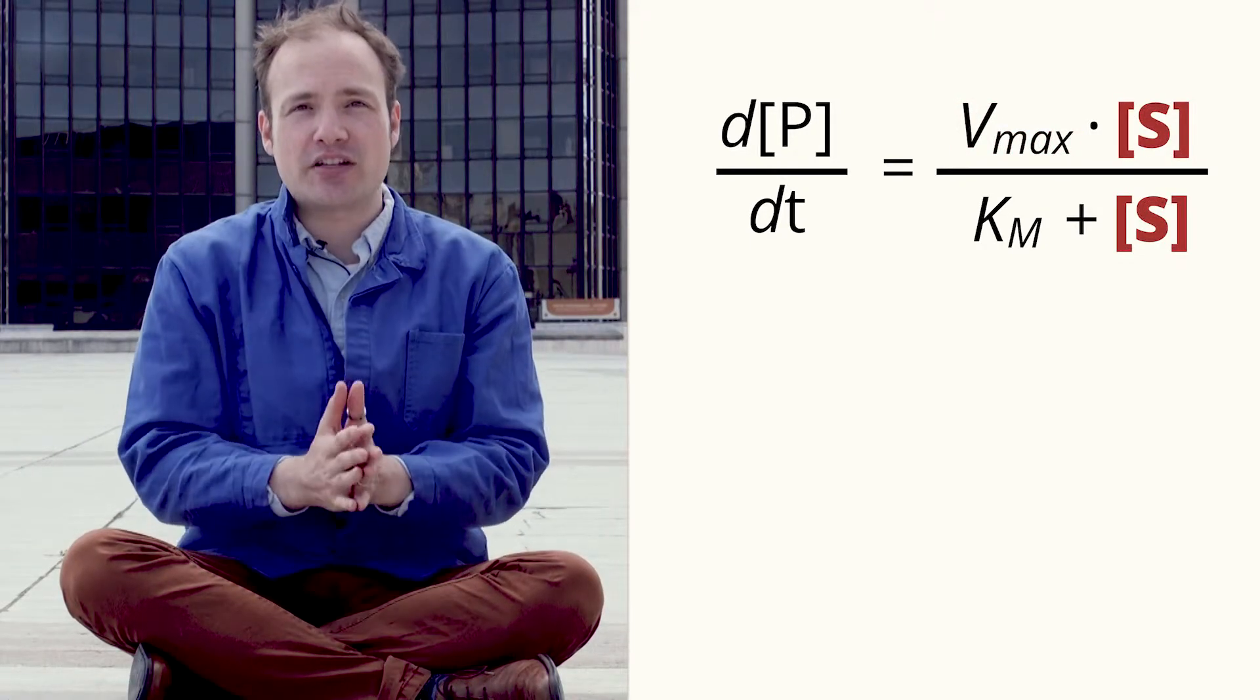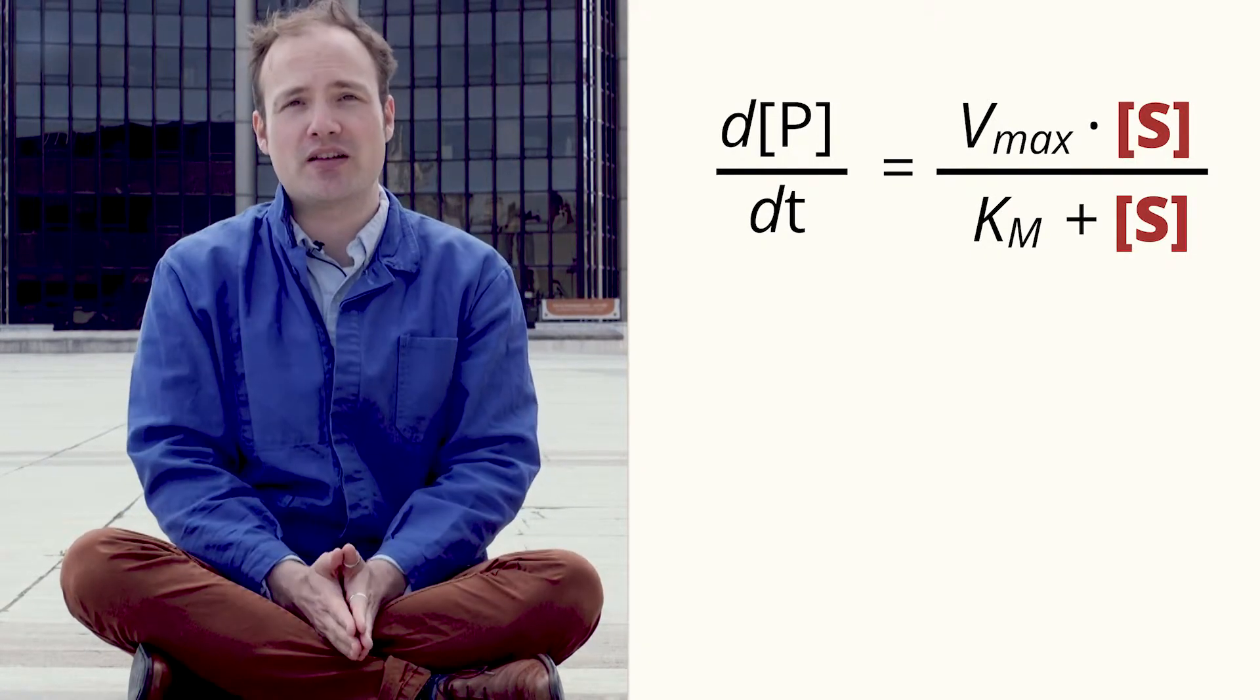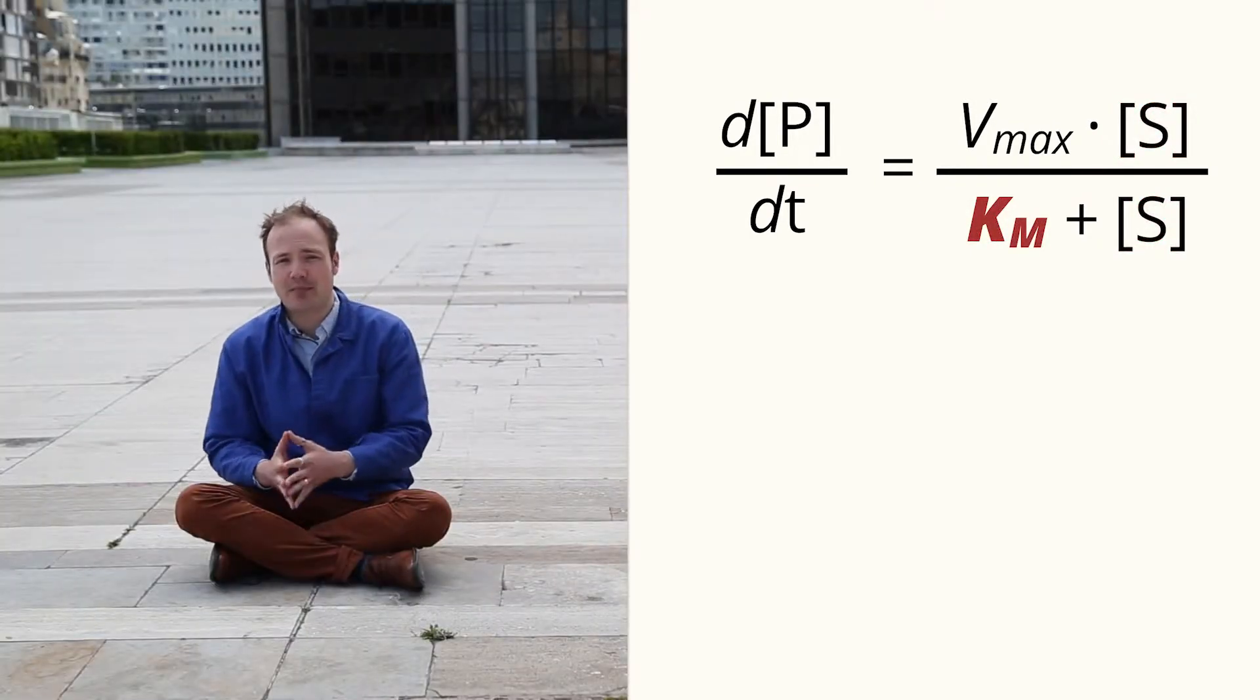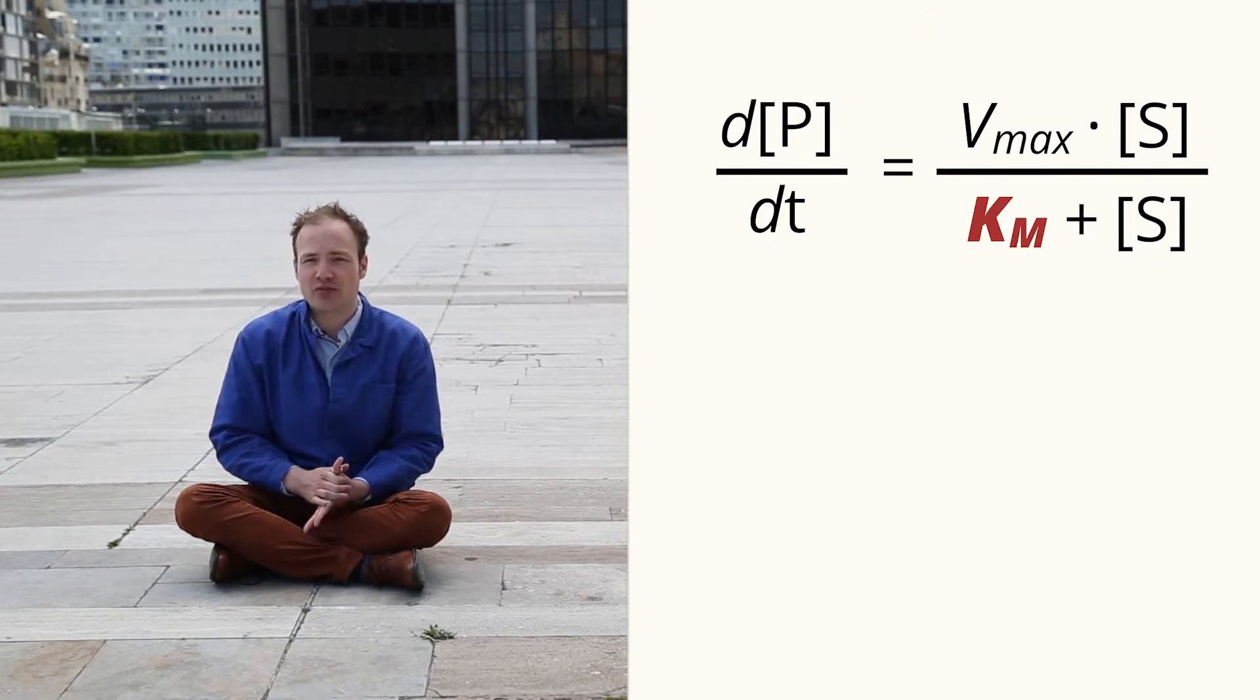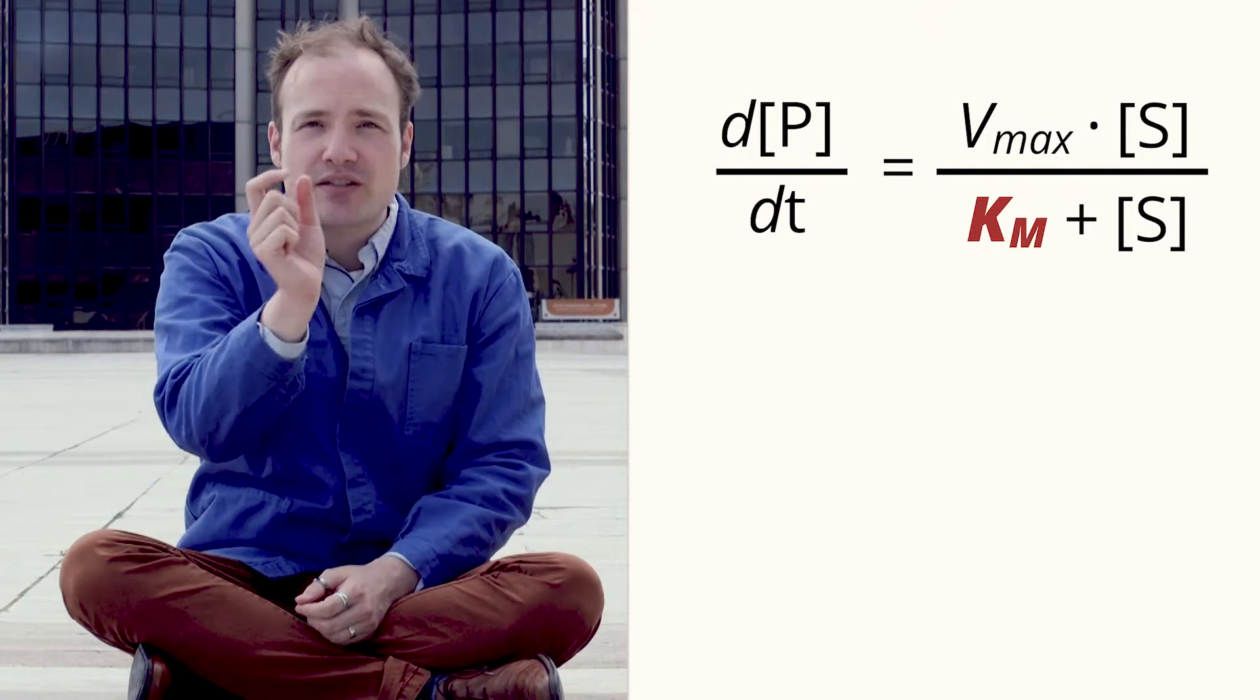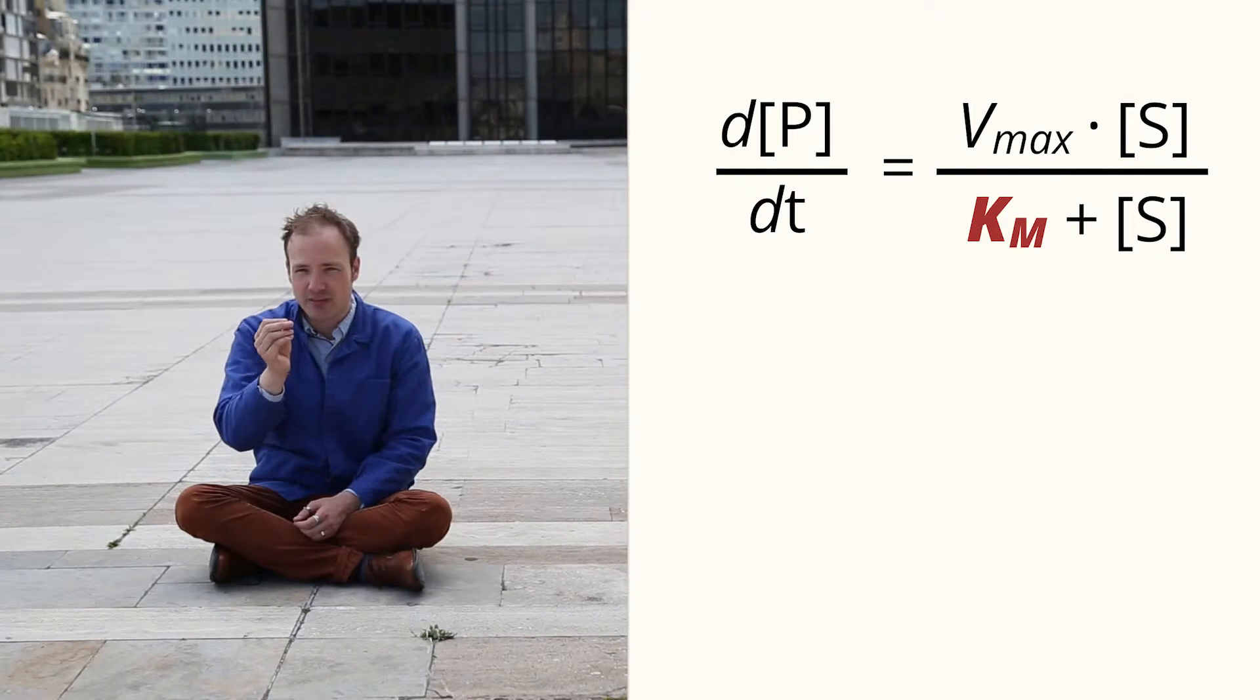Now, S represents the concentration of substrate. It has units of concentration, which shouldn't surprise us. But the real star of the Michaelis-Menten equation is the term Km. It also has units of concentration, and it is sometimes called the Michaelis constant. It represents the characteristic range of substrate concentrations that a particular enzyme responds to.